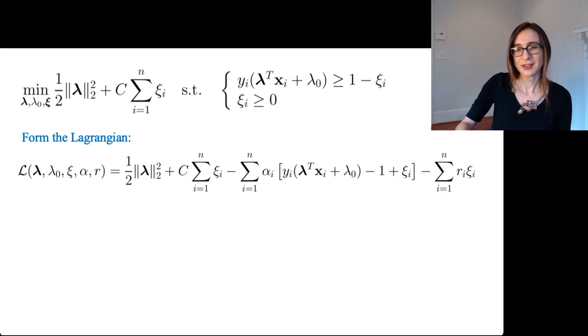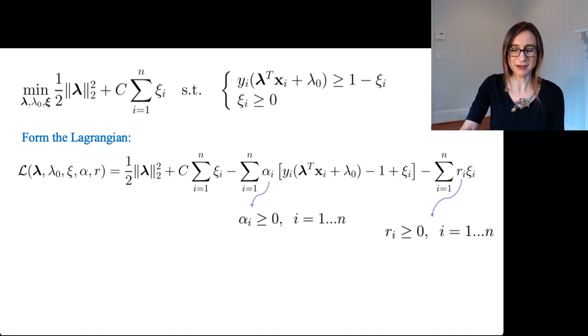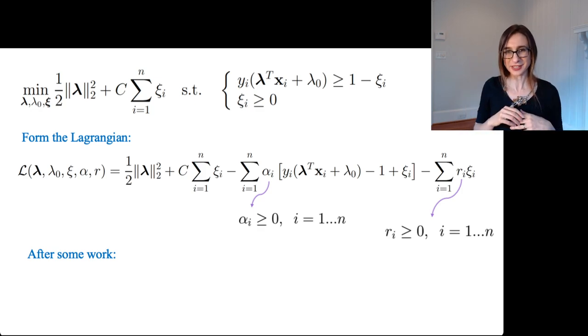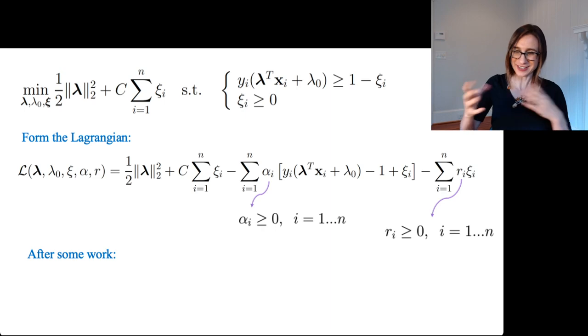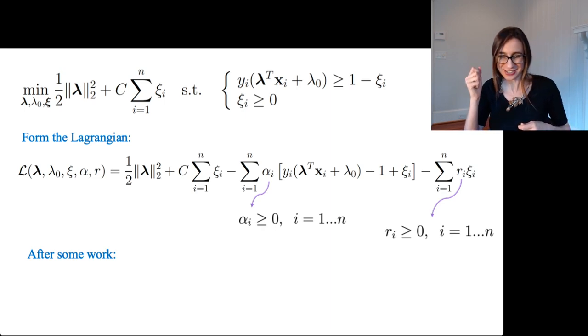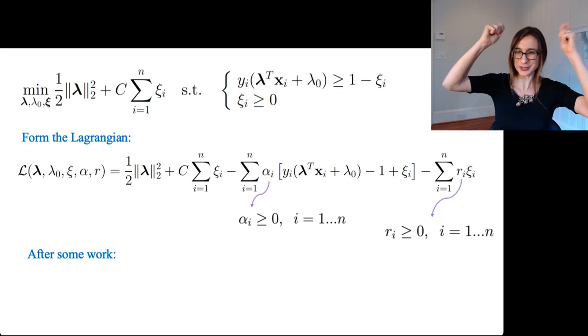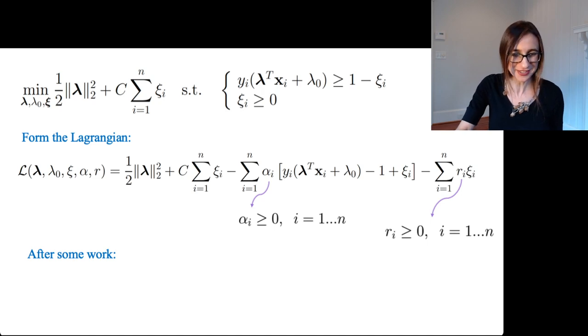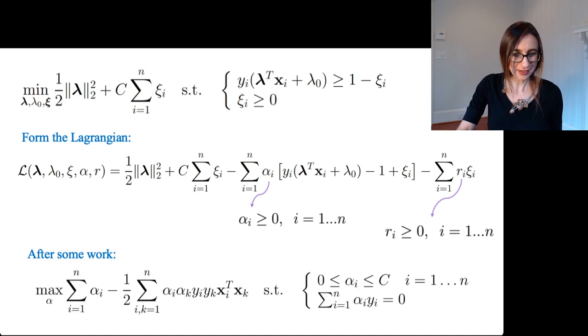All right, so we have all these new dual variables called r, and both the alphas and the r's have to be non-negative because, again, they are dual variables on inequality constraints, which always have to be non-negative. And then after doing almost exactly the same types of computations we did in the separable case, so where you, you know, write down the KKT conditions, Lagrangian stationarity, complementary slackness, all those really great tools, you end up with this dual.